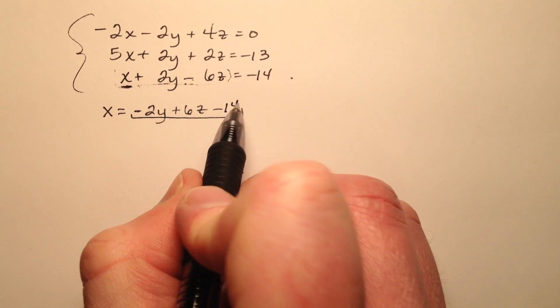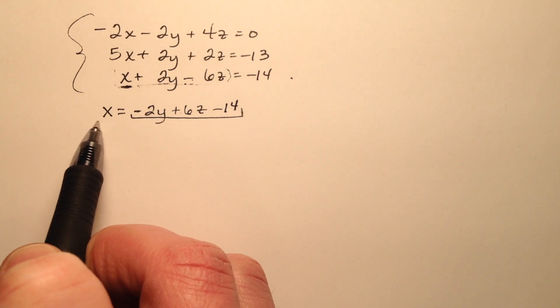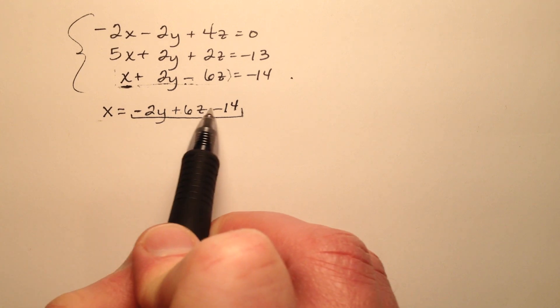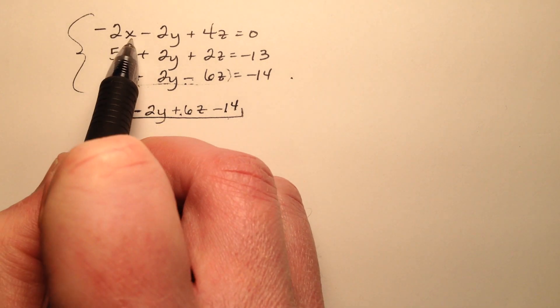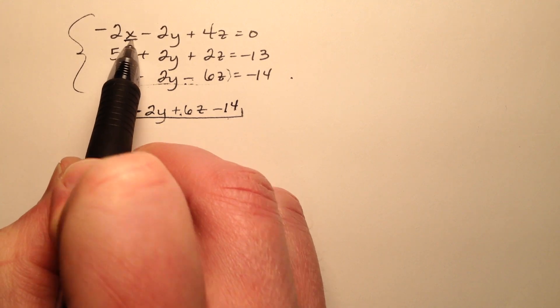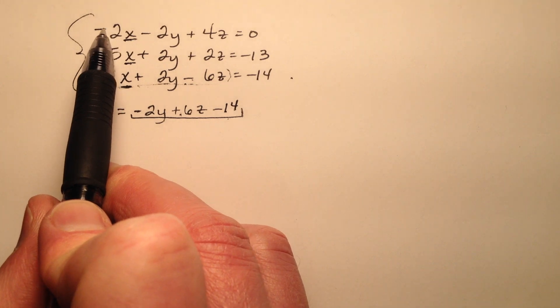So I see now that this expression, negative 2y plus 6z minus 14, is equivalent to x. So what I'm going to do, I'm going to take this expression and I'm going to substitute it into the x's in the first and the second equation. So let's go ahead and do that.